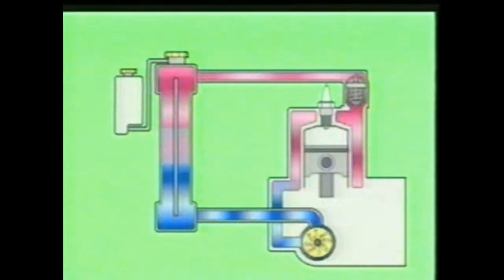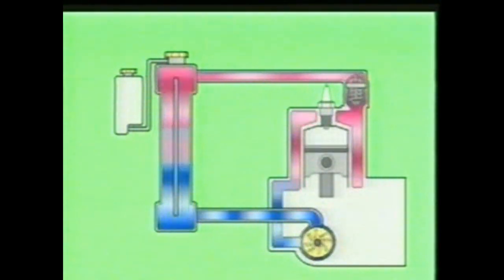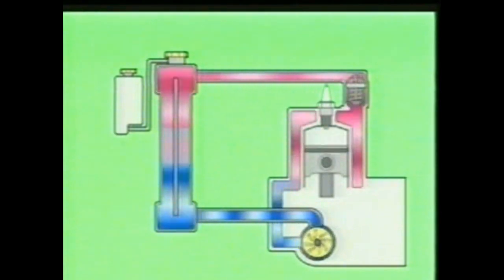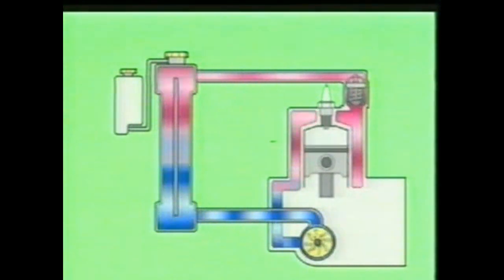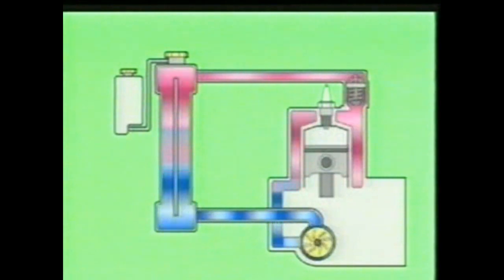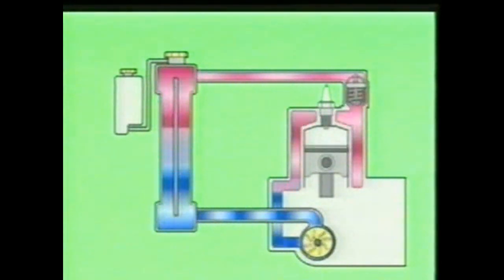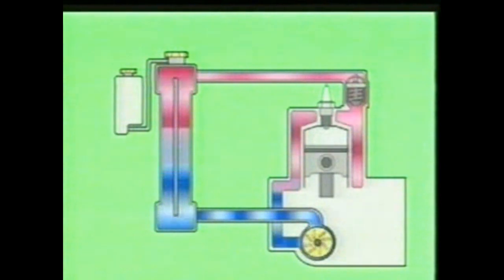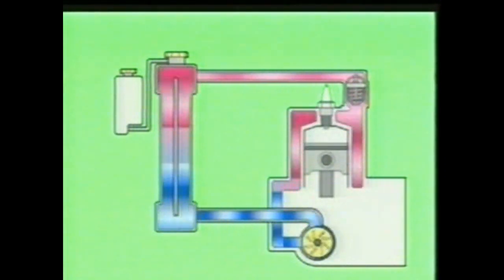The coolant in the water jacket absorbs the heat of the engine. The heated coolant then passes through the radiator, where its heat is transferred to the air that passes through the radiator. The coolant returns to the pump and is pumped through the system again.